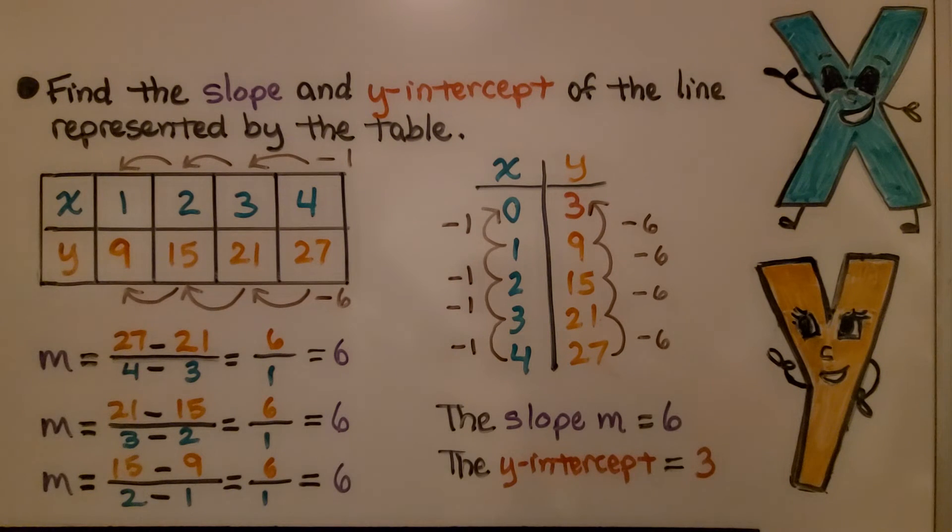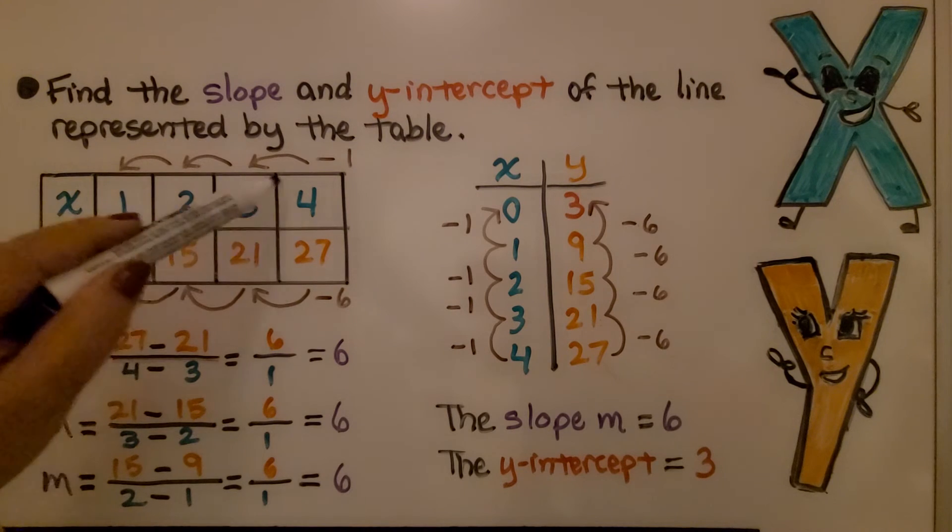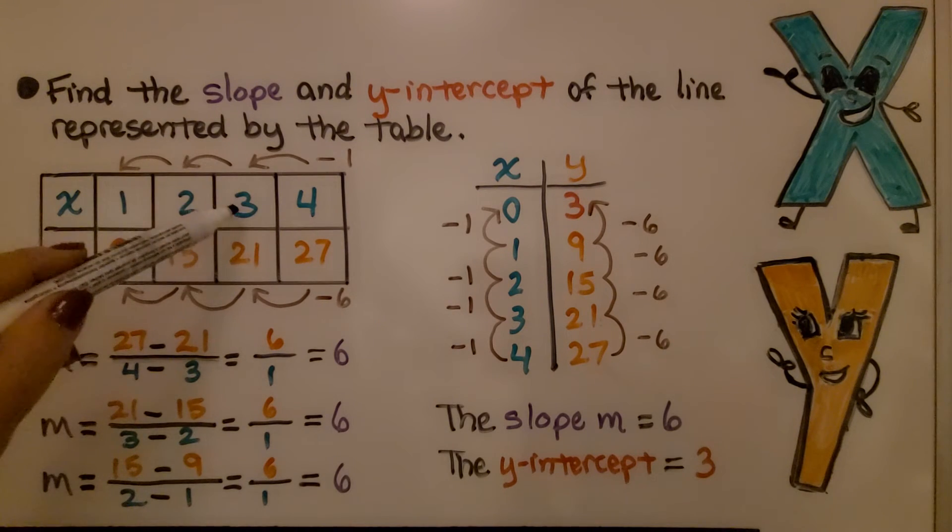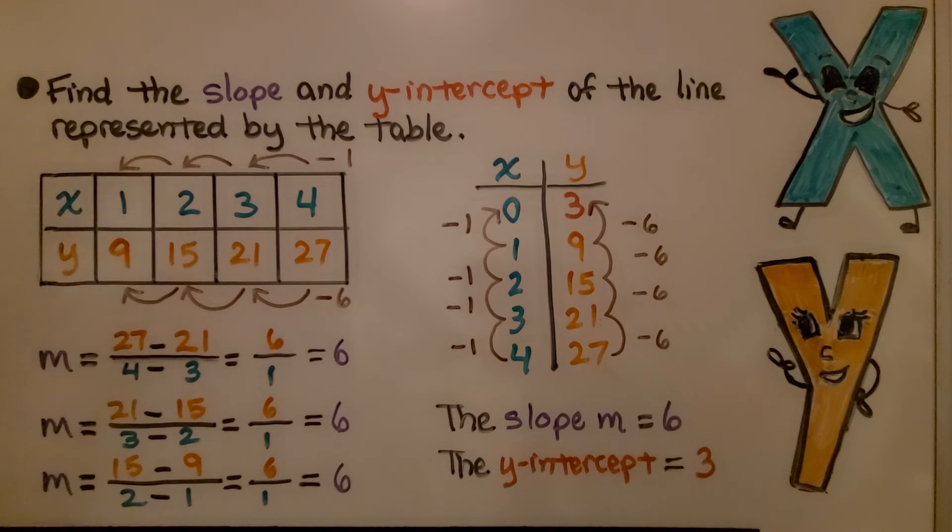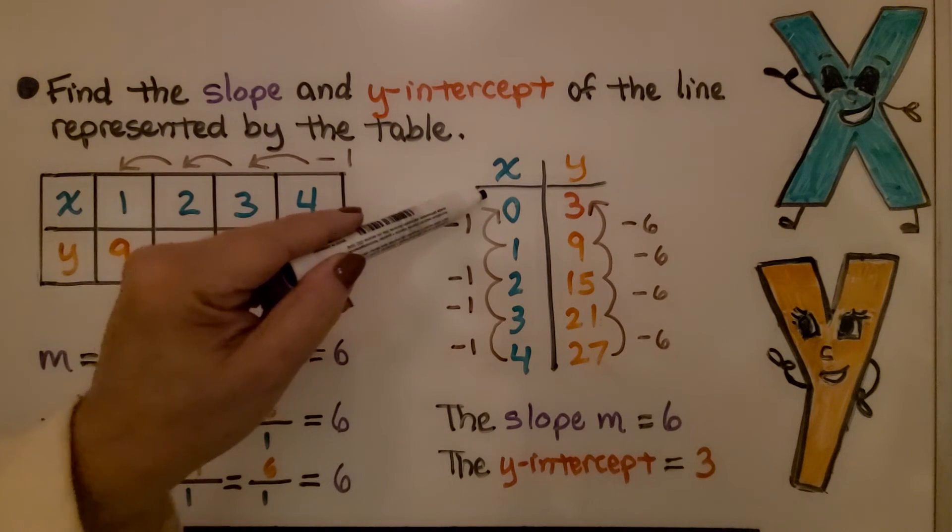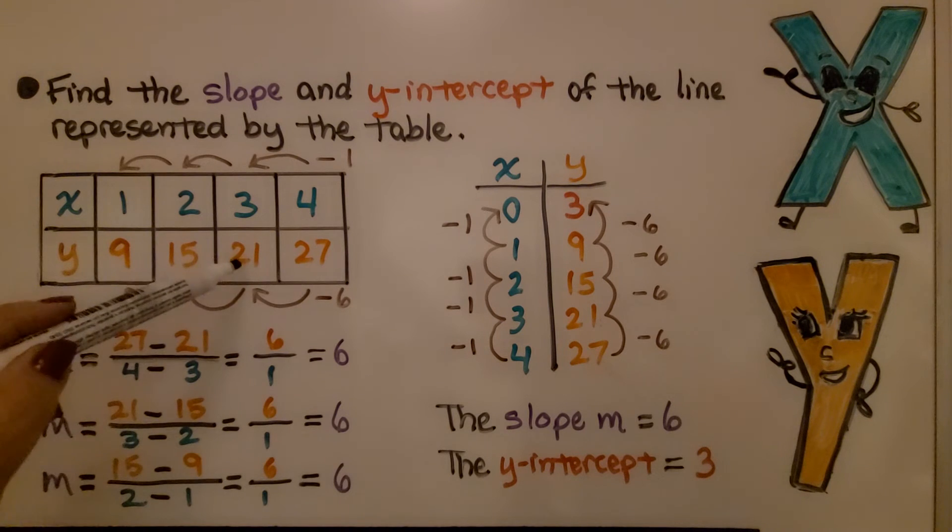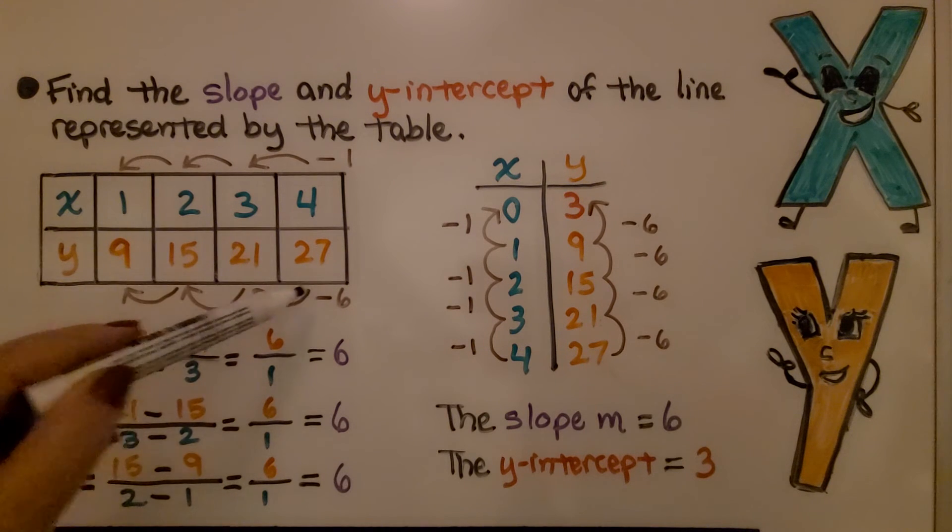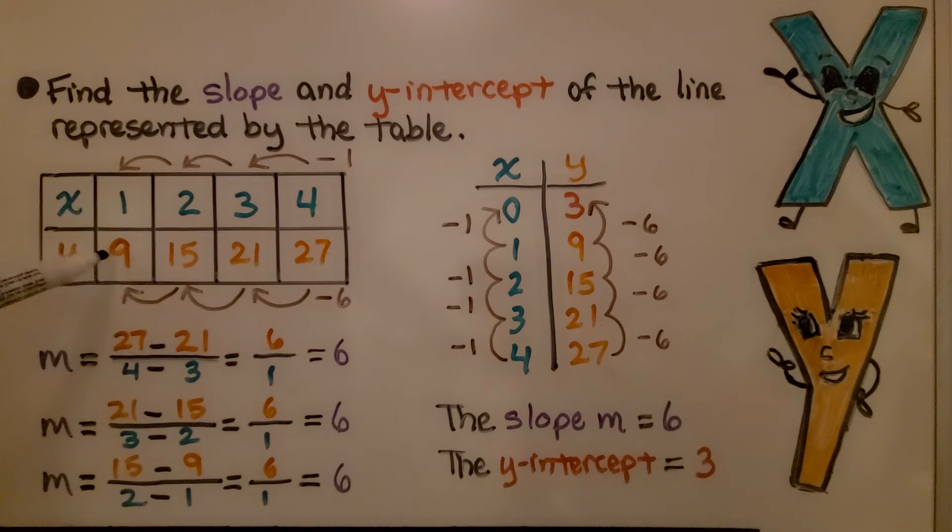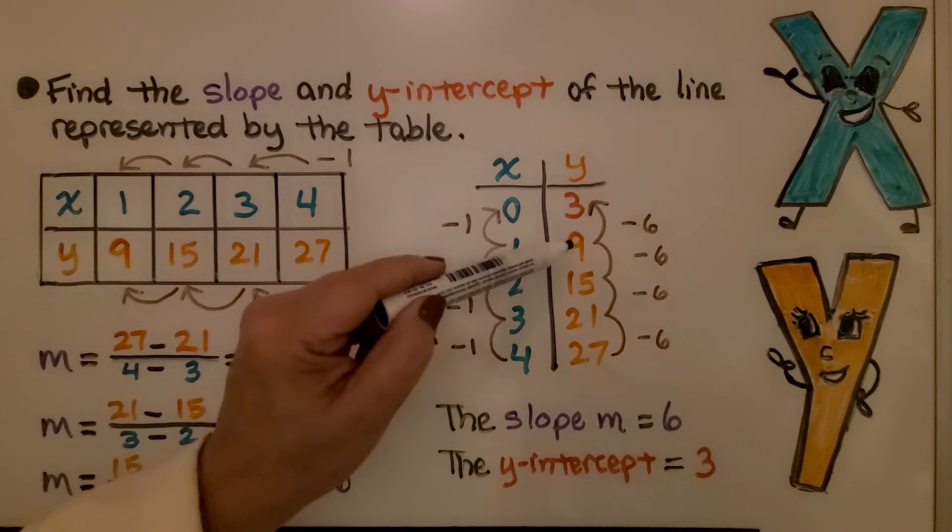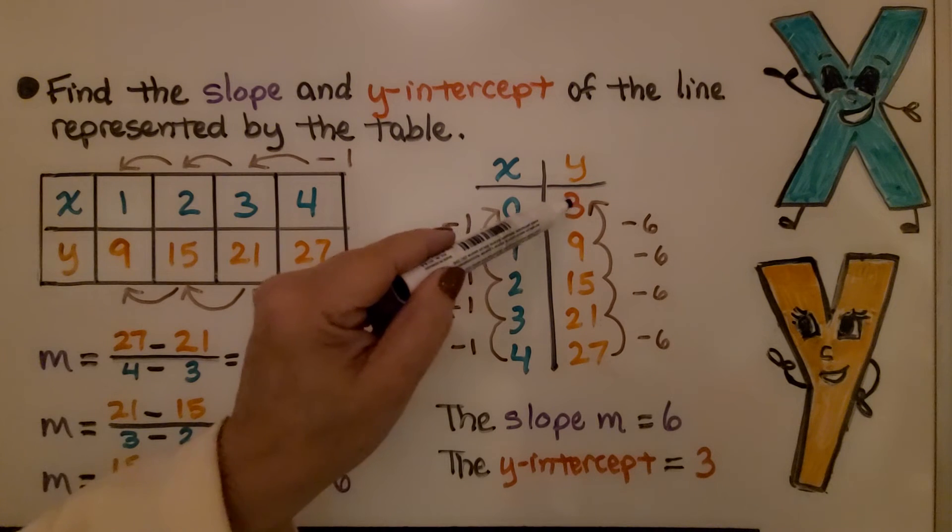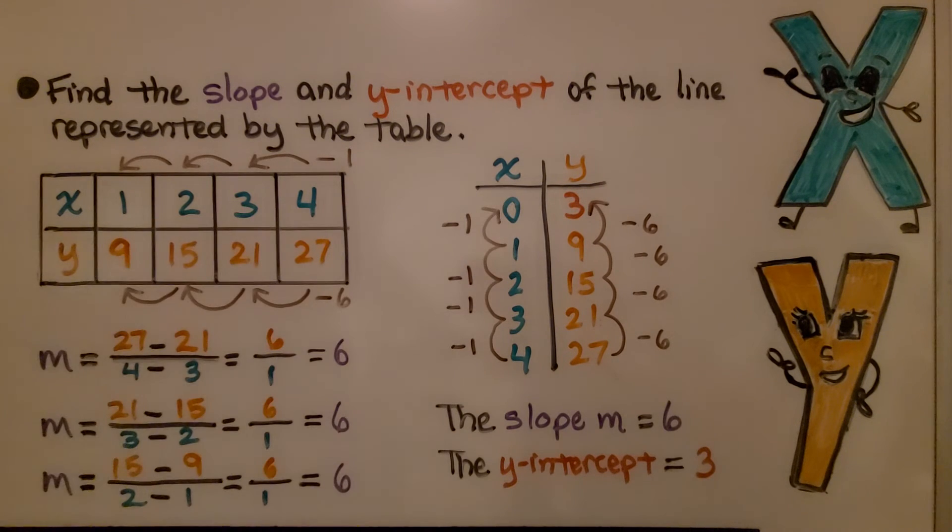Here it's telling us to find the slope and y-intercept of the line represented by the table. We look at our x values and our y values and look for our pattern. To go from 4 to 3, we subtract 1. We'll subtract 1 again, subtract 1 again. The goal is to find x equals 0. If we keep subtracting 1, we'll subtract 1 to get to 0. For our y values to go from 27 to 21, we subtracted 6 and we did it again to get to 15, did it again to get to 9. When we're at 9, we subtract 6 again and know that the y value is 3 when x is 0.